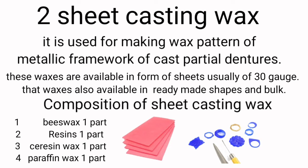Sheet casting wax is used for making wax patterns of the metallic framework of cast partial dentures. These waxes are available in the form of sheets, usually of 30 gauge, and are also available in ready-made shapes and bulk. Composition of sheet casting wax: beeswax 1 part, resin 1 part, ceresin wax 1 part, paraffin wax 1 part.